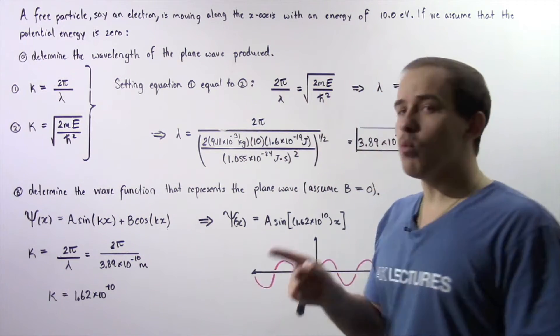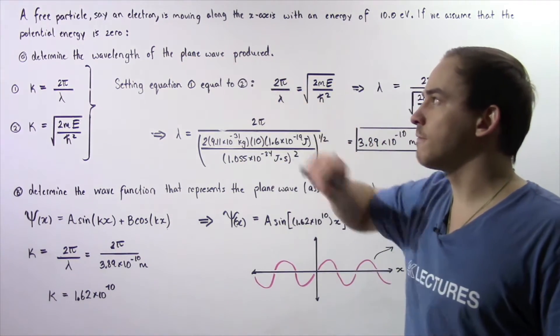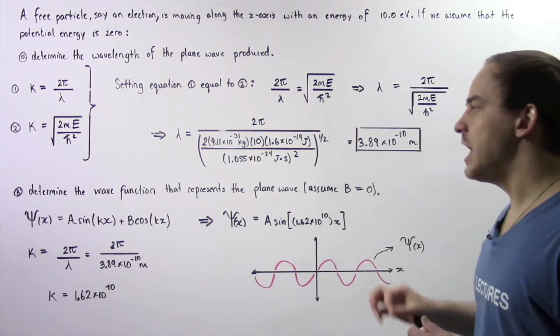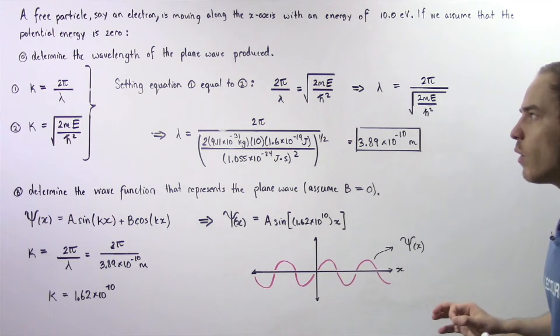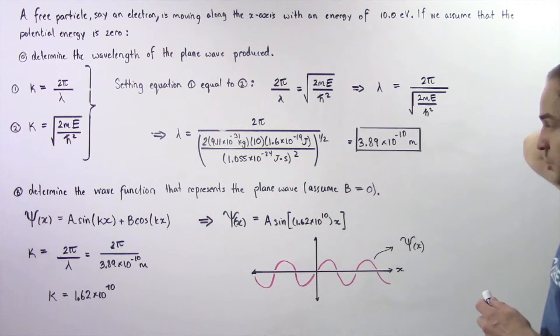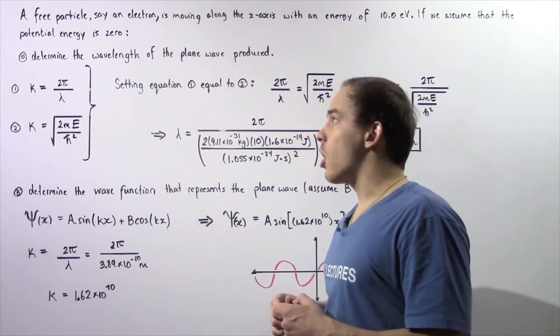we want to determine the wavelength of the plane wave produced by the free particle. And in part b, we want to determine the wave function that represents the plane wave produced by our free particle. We're going to assume that our constant b is equal to zero. So let's begin with part a.